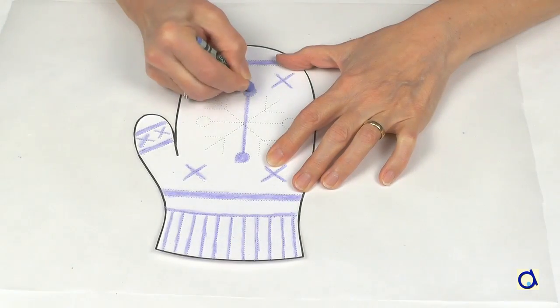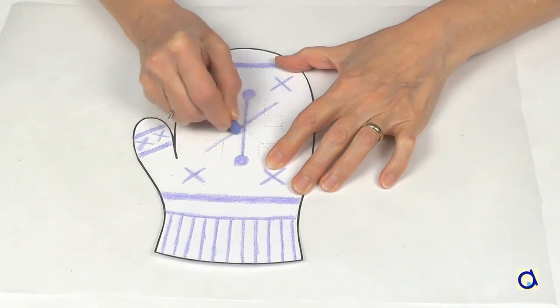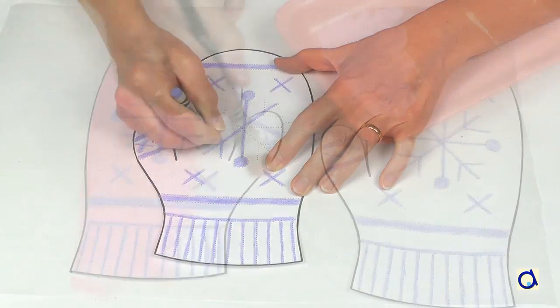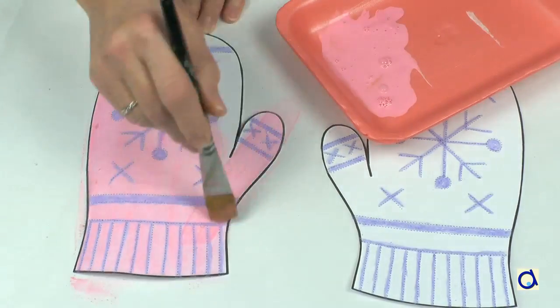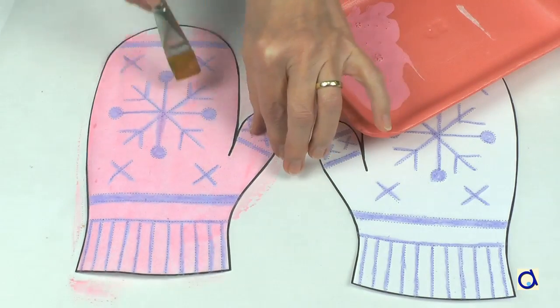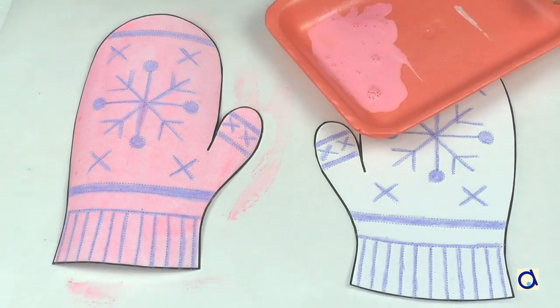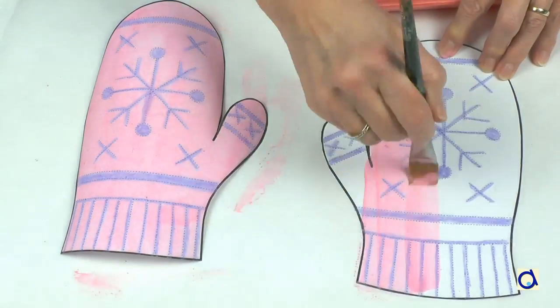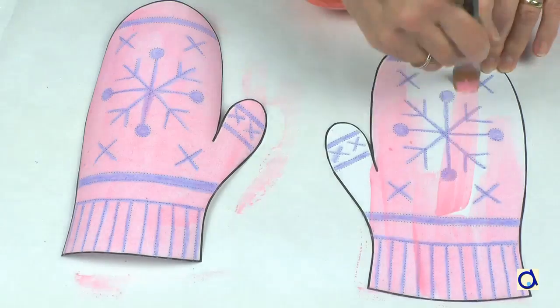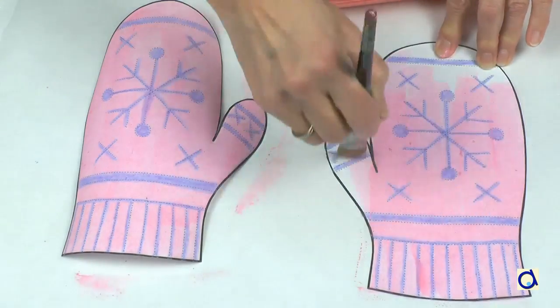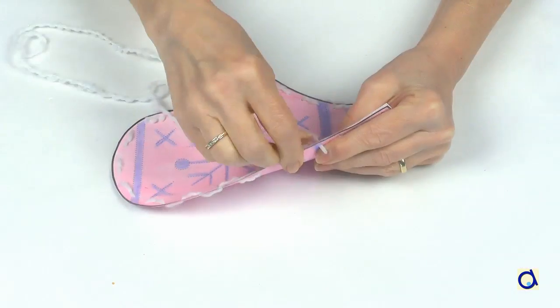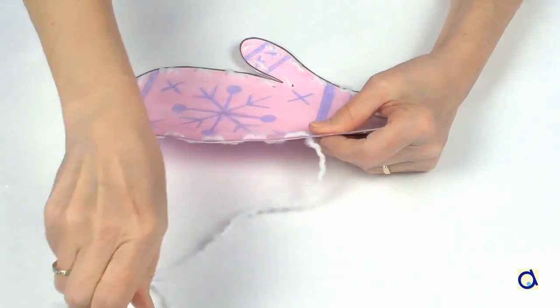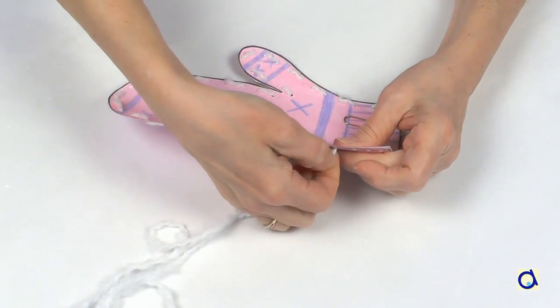Take wax crayons and draw along the dotted lines. Now, take diluted paint and spread it on both sides of the mitten. The wax crayon traces remain visible in spite of the paint. Let the paint dry and then proceed as in the first example. Align the two sides of the mitten, make holes, and sew them together with yarn or twine.